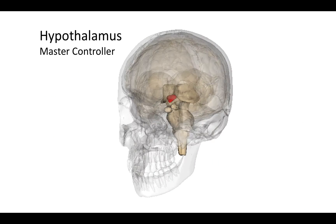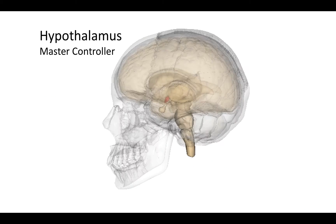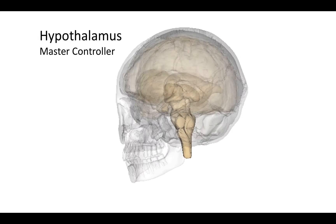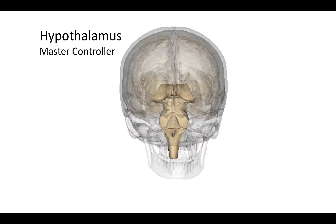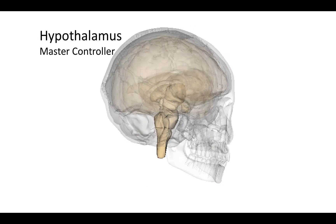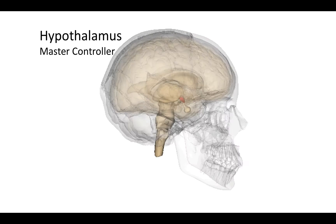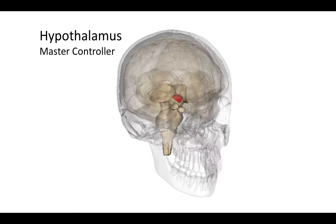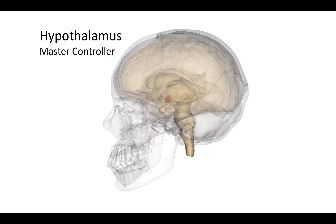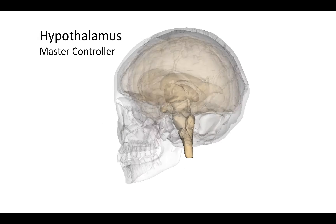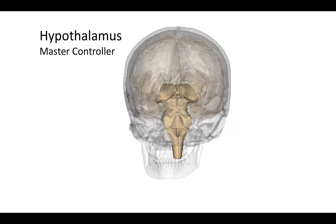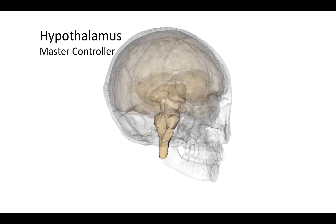The hypothalamus is sometimes referred to as the master controller, in part because it secretes a number of hormones that influence the release of hormones from the pituitary gland.